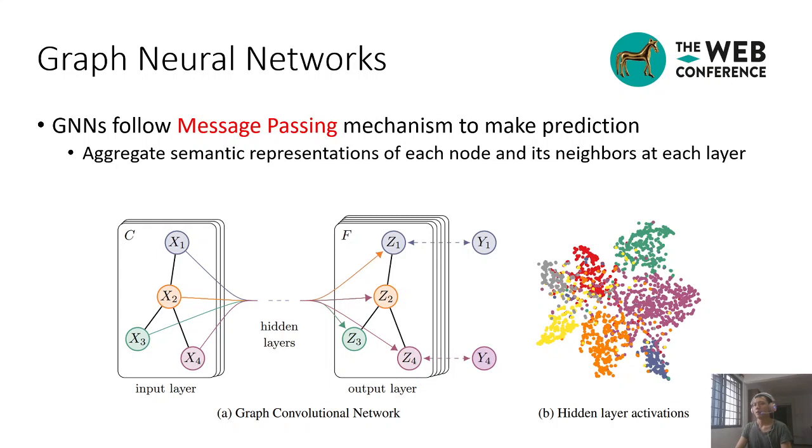In terms of optimization, curriculum learning excludes the negative impacts from difficult or even noisy samples in the early training stages and guides the model towards better local minima in the parameter space.